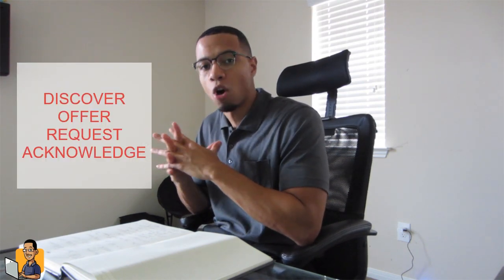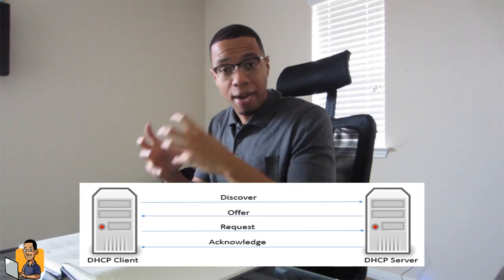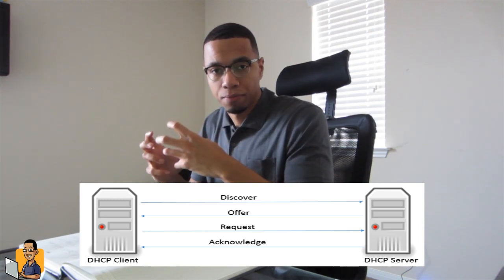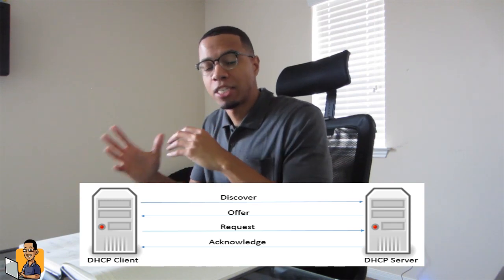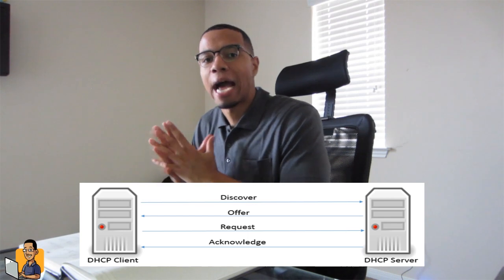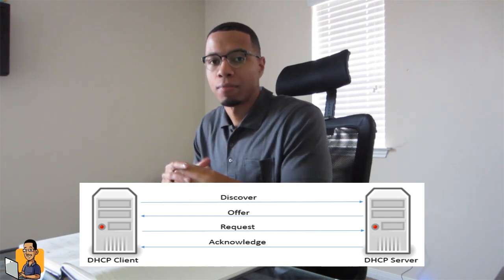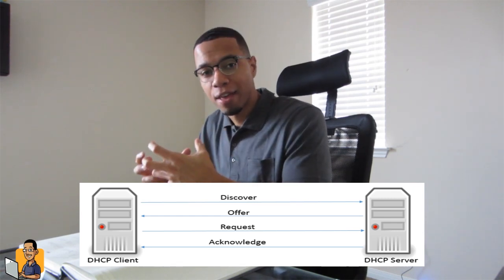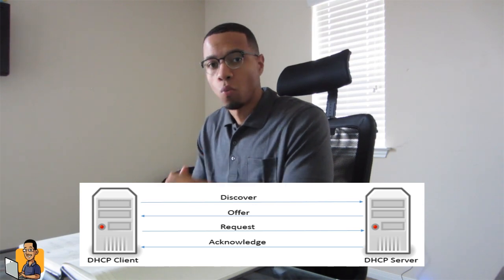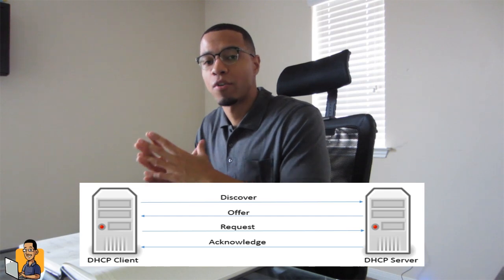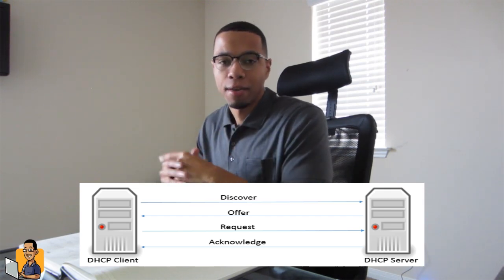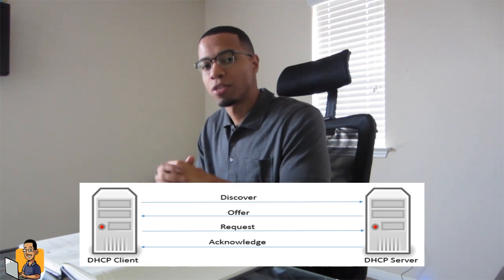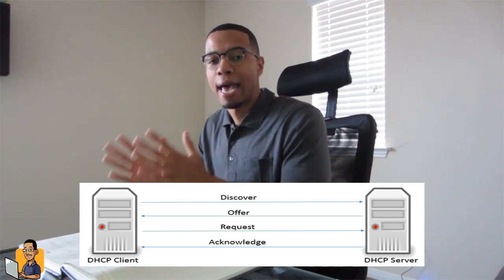DORA is an acronym. It stands for Discover, Offer, Request, Acknowledge. During the discovery part of the process, your device actually discovers the DHCP server. Once it discovers the DHCP server, the DHCP server offers an IP address to that device. Once the offer is sent, the device requests that it can have that IP address that was offered. Once that goes through, the last step is the DHCP server acknowledging that this device wants that IP address, so it goes ahead and makes sure that device has that IP address.